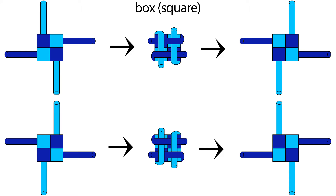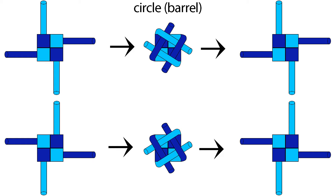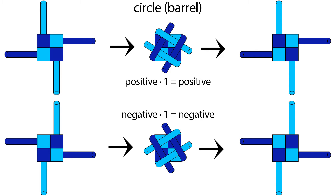So if you have a positive position and you make a box stitch, you'll get a negative position. And if you have a negative position and you make a box stitch, you'll get a positive position — that's why a box stitch is like multiplying by minus 1. For the circle stitch, if you have a positive position you'll get a positive position, and a negative position will stay negative — that's why it's like multiplying by 1.